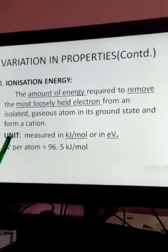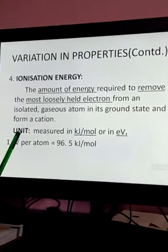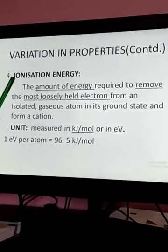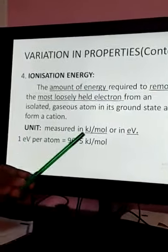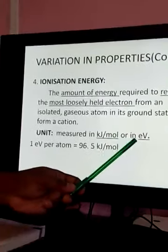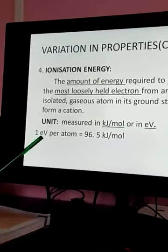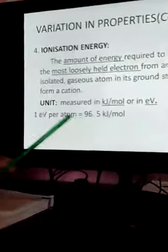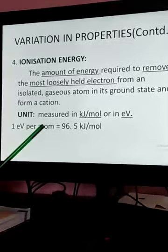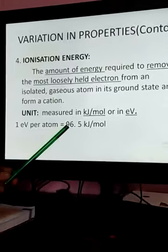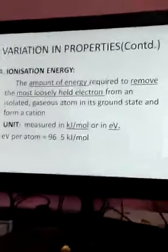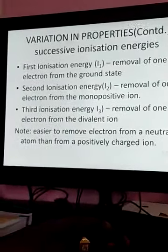And to form a cation, certain amount of energy is required. That energy is what is known as ionization energy. The unit is kilojoule per mole or electron volt. What is the relationship between electron volt and kilojoule? One electron volt per atom is equal to 96.5 kilojoule per mole.